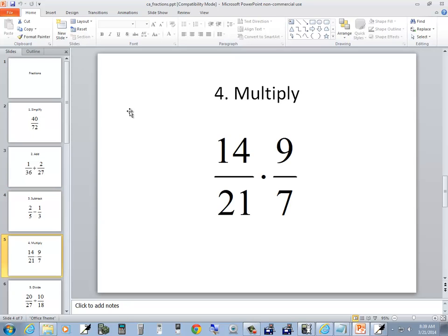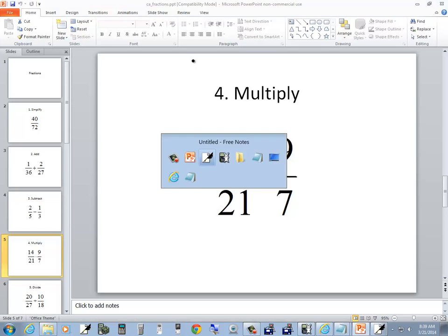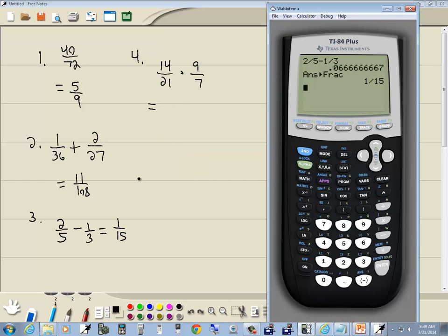Our fourth problem is multiplication. We've got 14 over 21 times 9 over 7. So press clear to clear the screen. 14 divided by 21 times 9 divided by 7, and then we'll do math, enter, enter, and we get six sevenths.